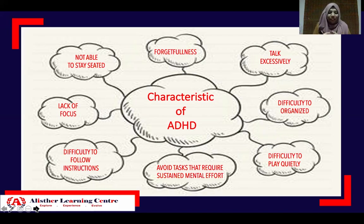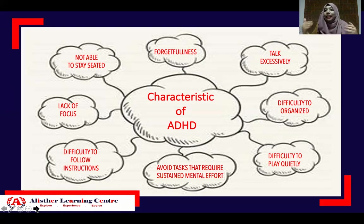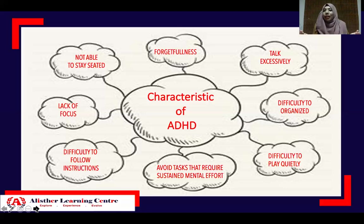The next characteristic is difficulty to organize — difficulty managing time, keeping track of tasks and activities, and difficulty prioritizing work. For example, they know they have a project to submit on Monday, but only on Sunday night do they start preparing their project.